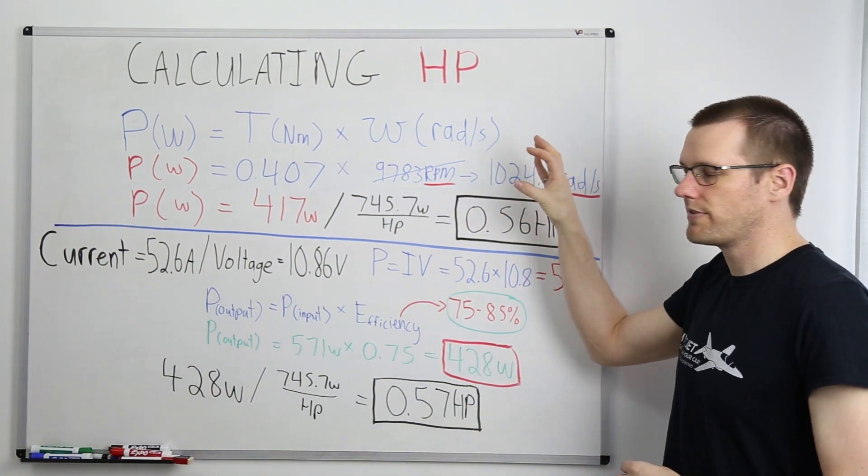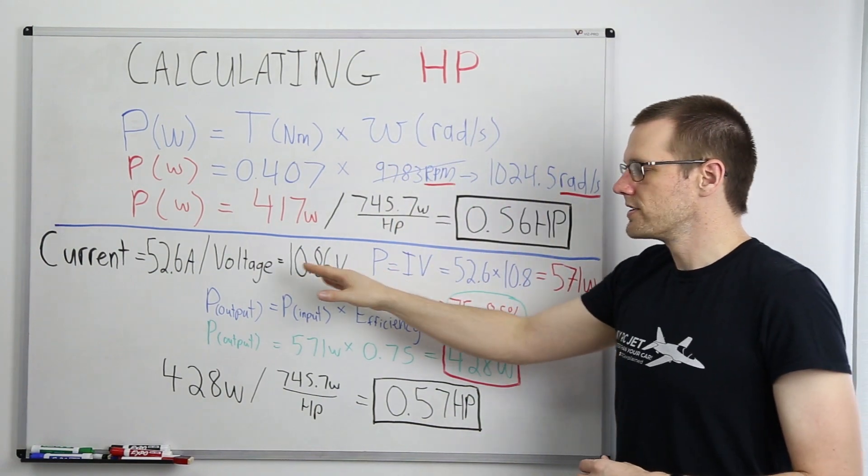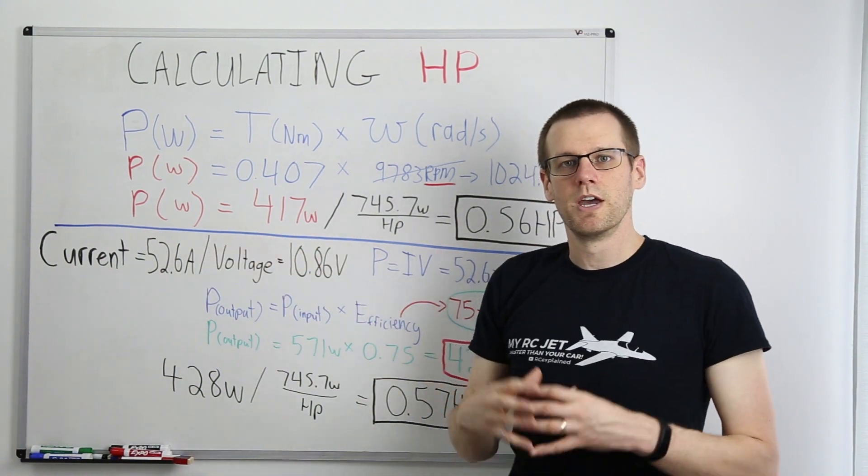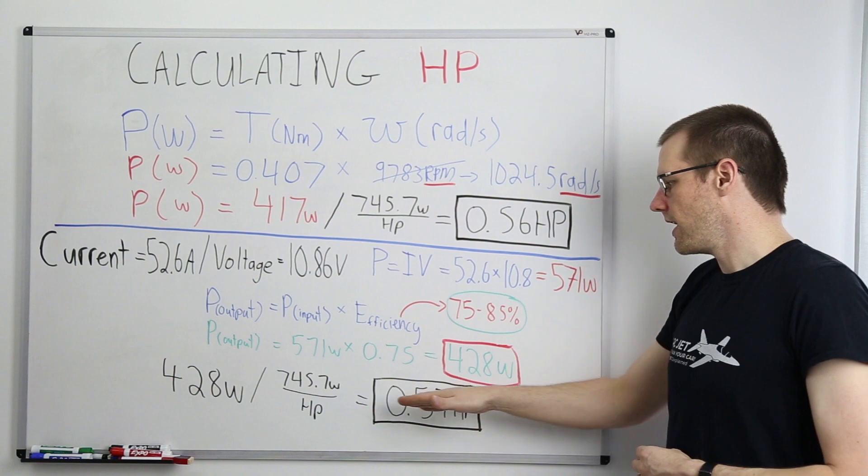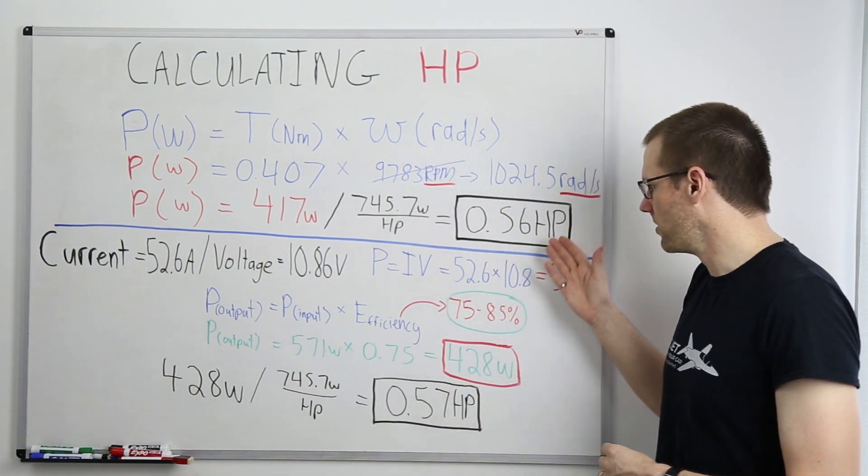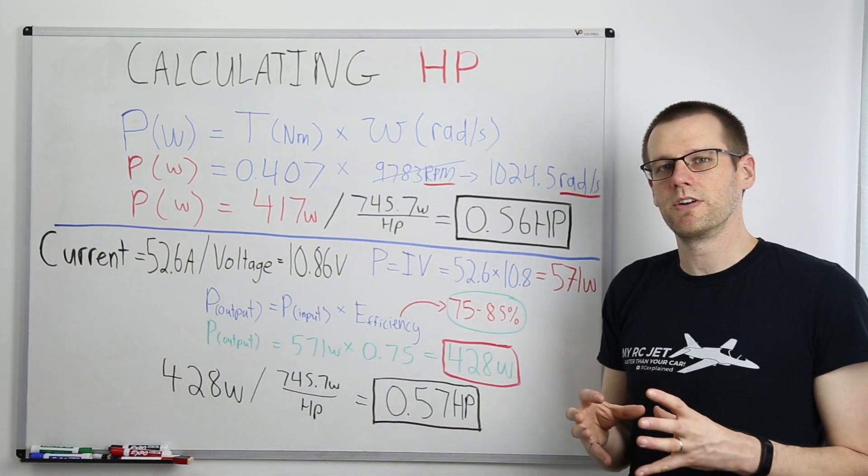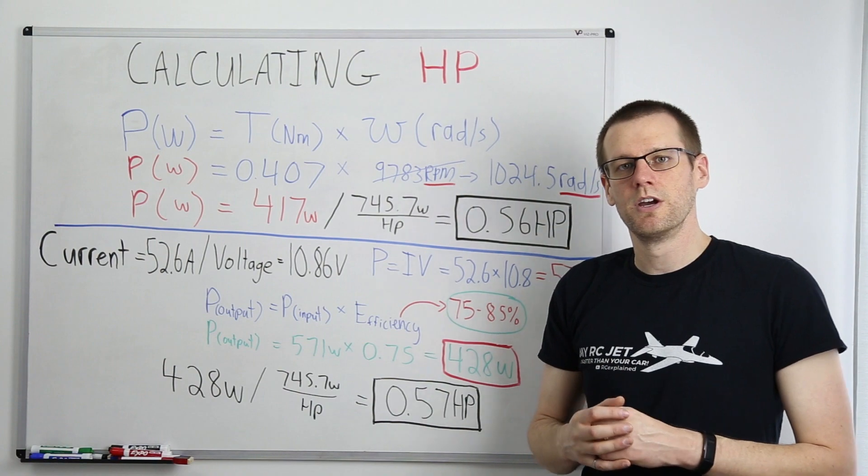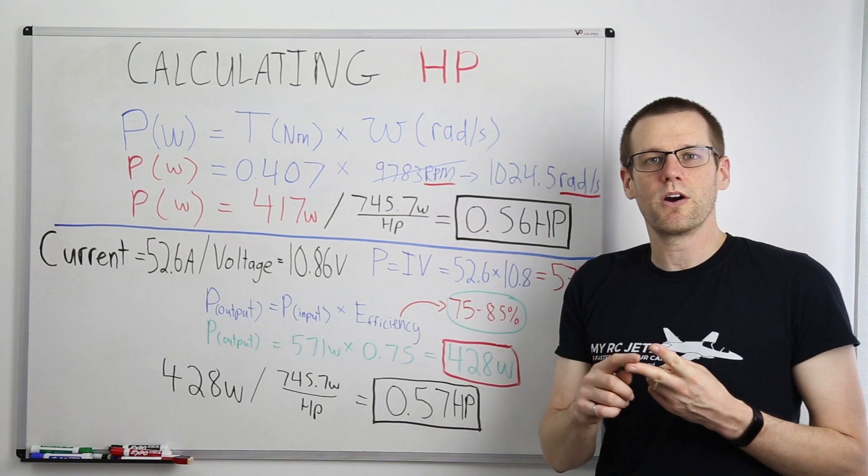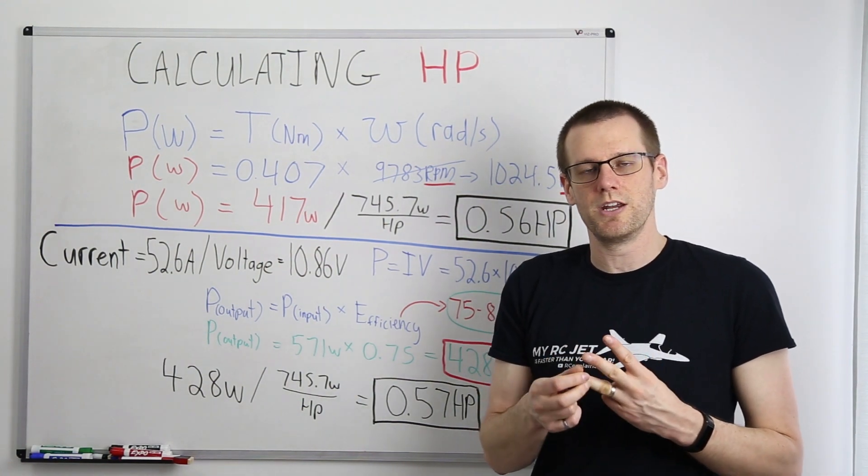However, in this one, we don't use the actual mechanical properties. We're using only electrical properties, and we can still come out to a resulting answer that is somewhat similar to what we knew. So really, the only item in question is this efficiency range of 75 to 85%. We have to determine a value from this range based on the quality of our system, how hard we're pushing it, how close we think we are to the maximum efficiency range of the motor.